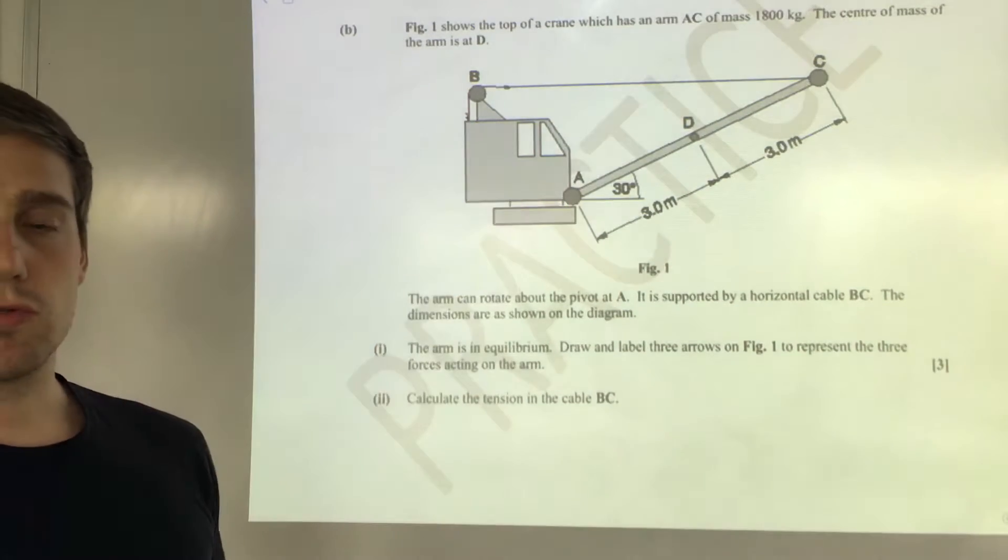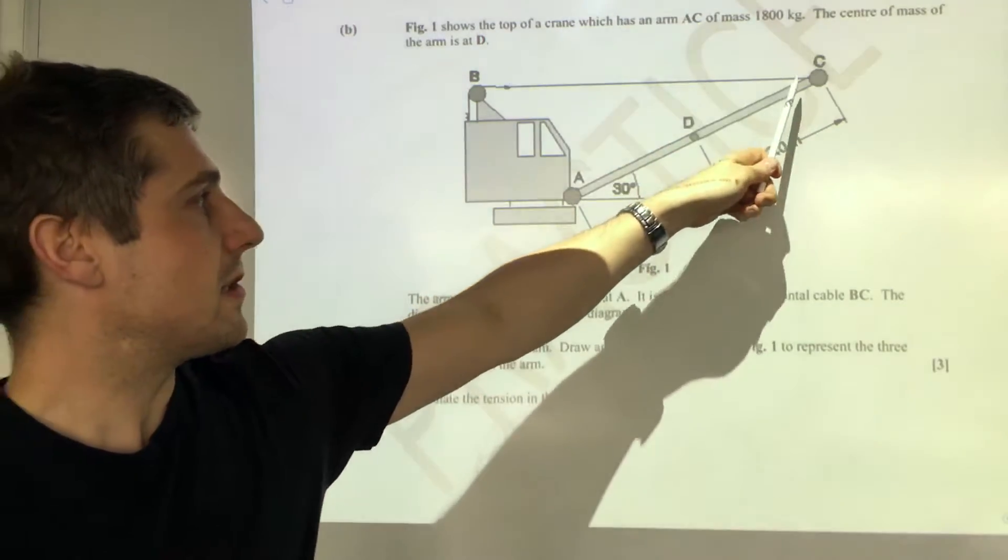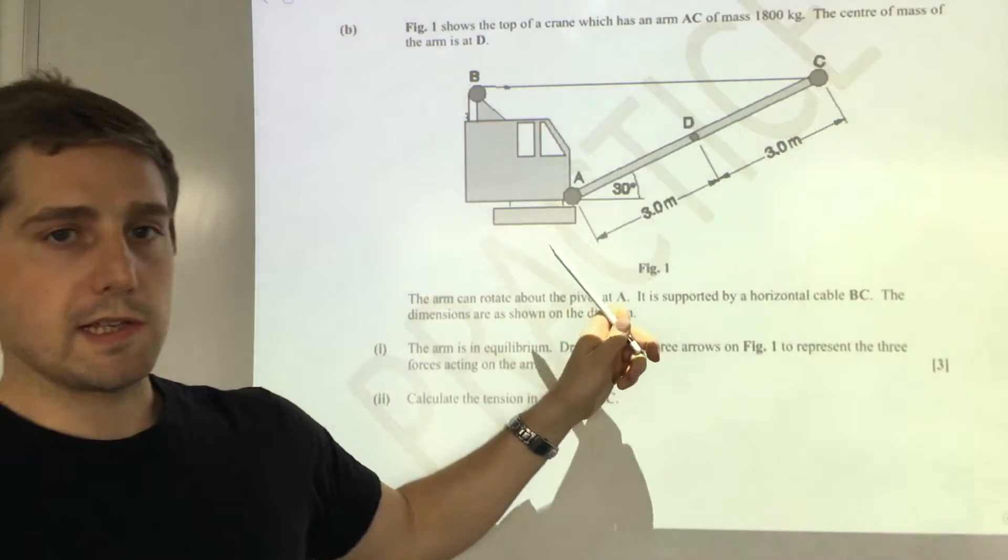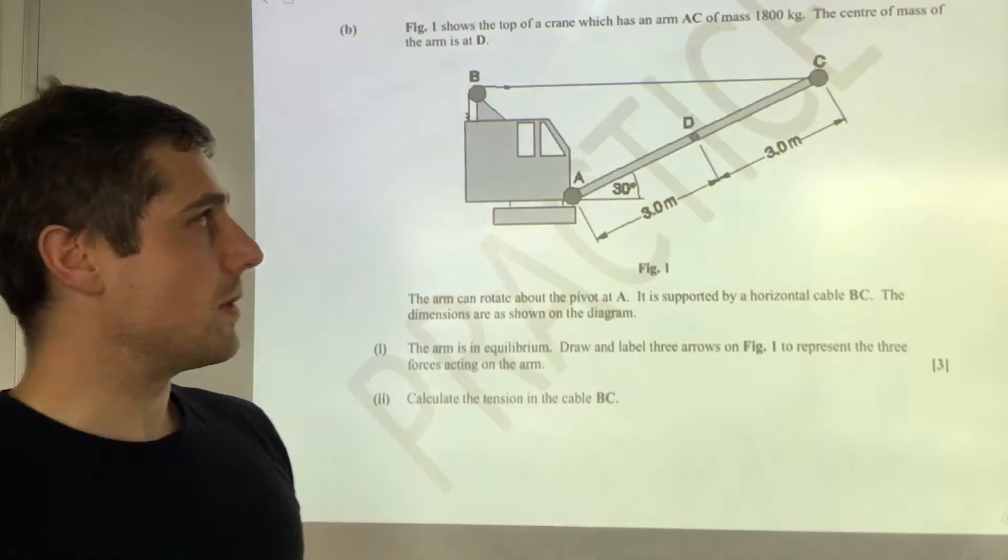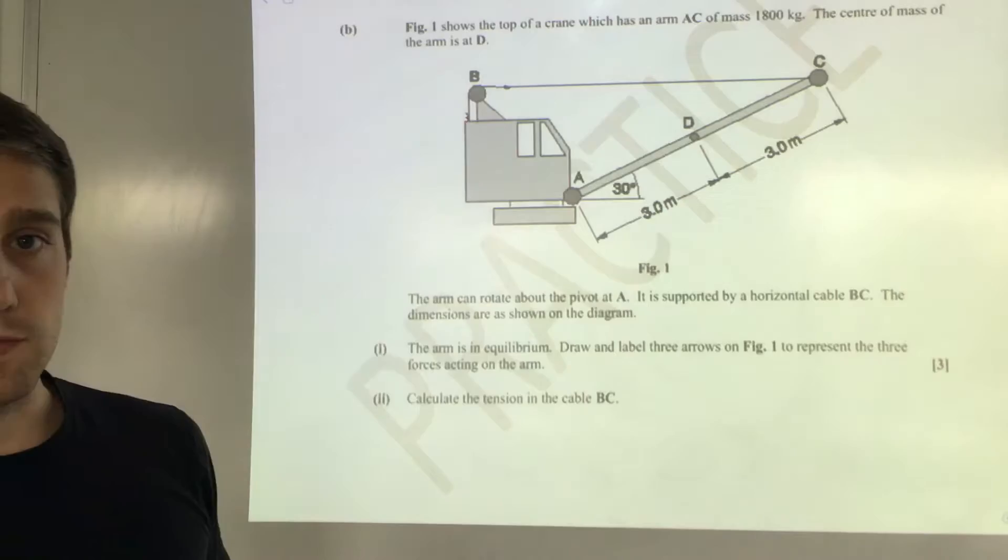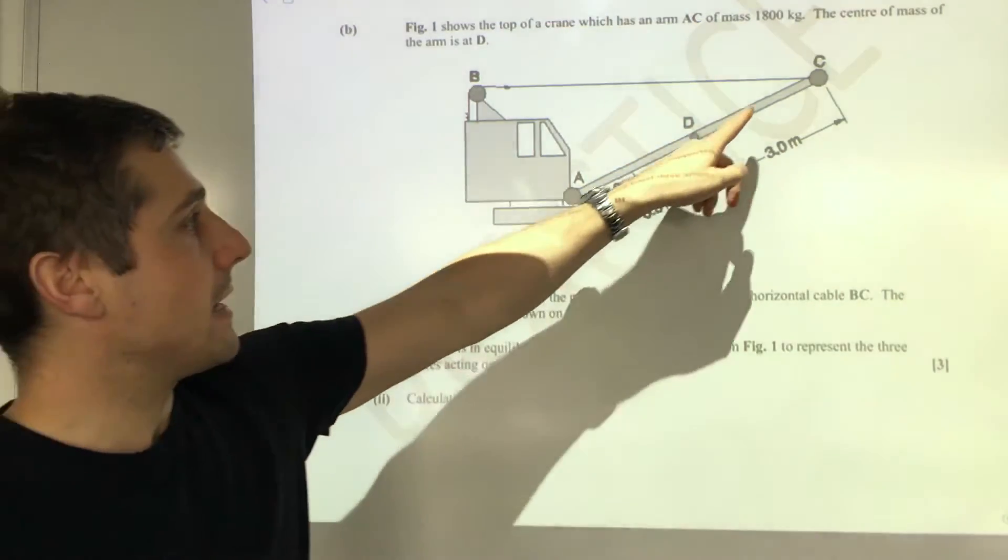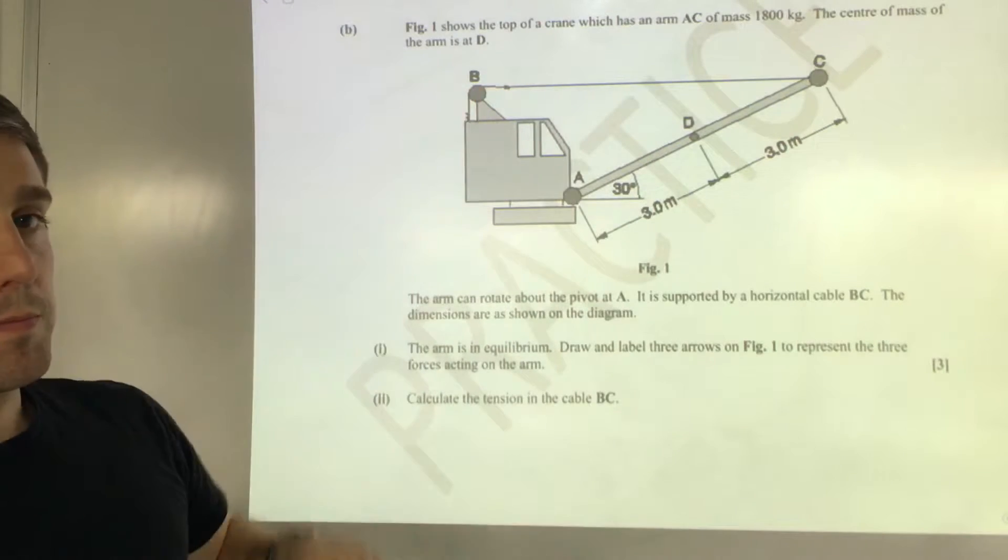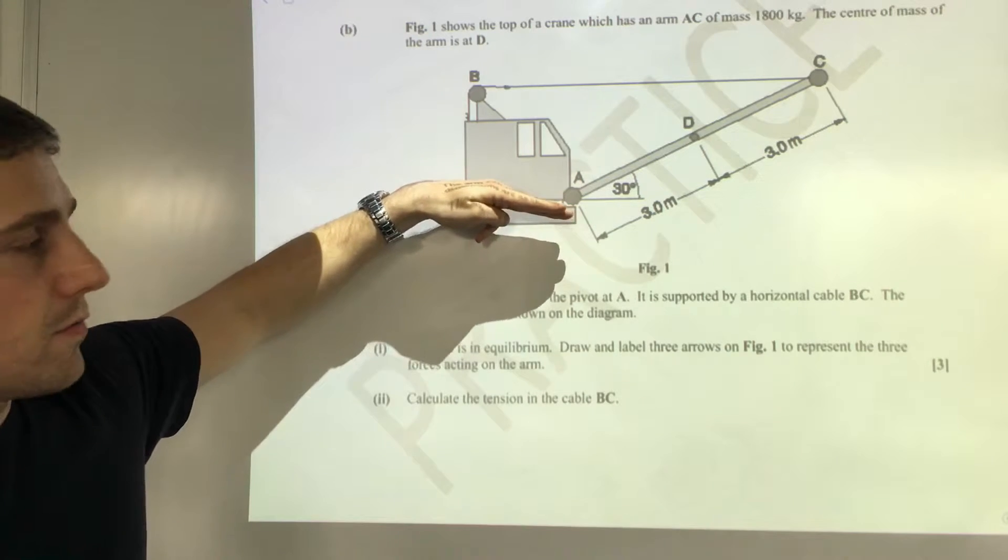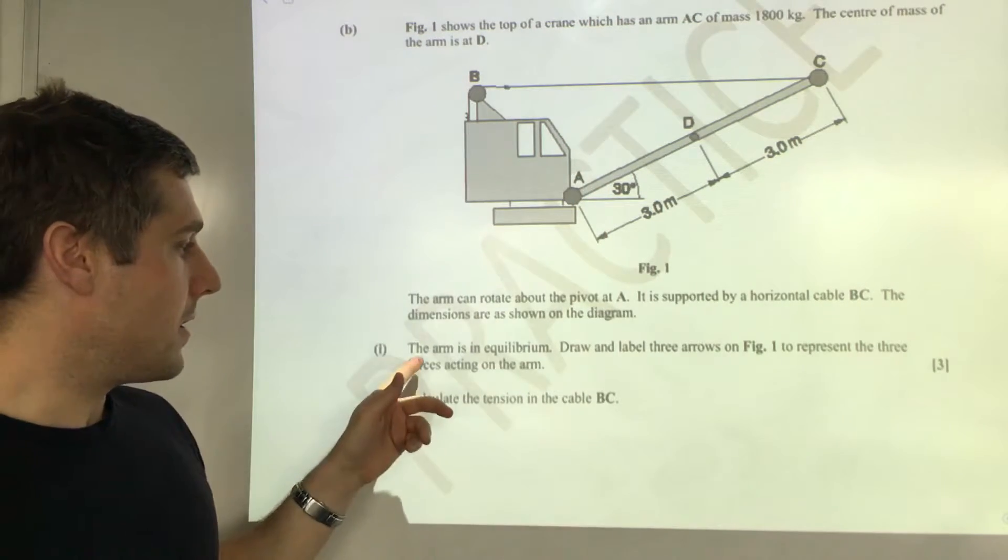For part B we're looking at this crane here with the arm A, C, and D marked on it. It's at 30 degrees to the horizontal, it's six meters in total length, it's got a mass of 1800 kilograms, and the center of mass is at D, which means that the weight acts through that point there. That's held up by this cable from B to C, and the arm as it's raised or lowered rotates about point A. The arm is in equilibrium.